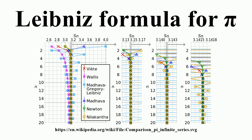For example, the Shanks transformation, Euler transform, or van Weingarten transformation, which are general methods for alternating series, can be applied effectively to the partial sums of the Liebner's series. Further, combining terms pairwise gives the non-alternating series, which can be evaluated to high precision from a small number of terms using Richardson extrapolation or the Euler-Maclaurin formula.